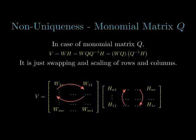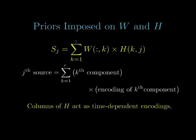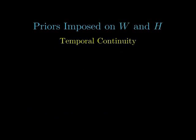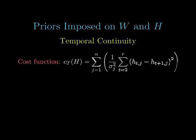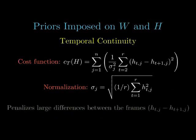However, non-monomial matrices Q are a cause for concern. In order to avoid this, we impose priors on the matrices W and H. Since the columns of H form time-dependent encodings of the components in W, we impose priors only on the matrix H. The first of these is temporal continuity. By minimizing a suitably normalized loss function, we ensure that any large changes in the time-dependent gains from one frame to the next are penalized and thus retain temporal information.